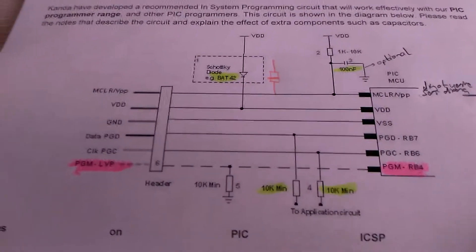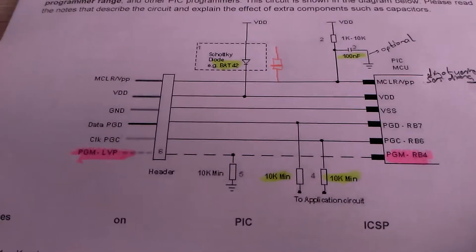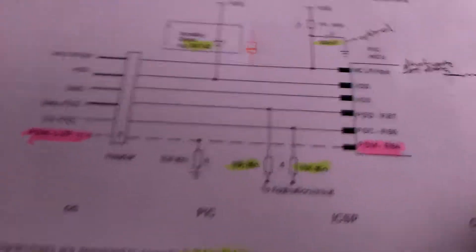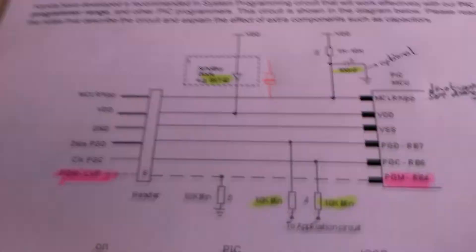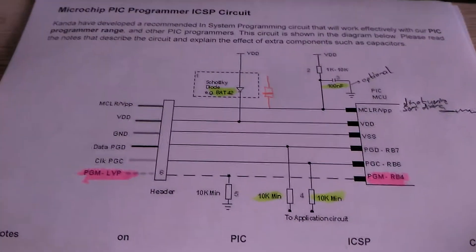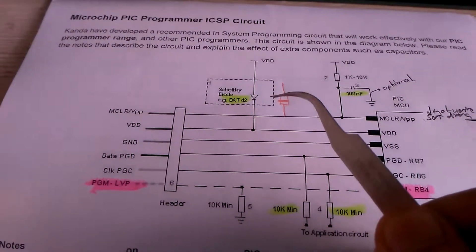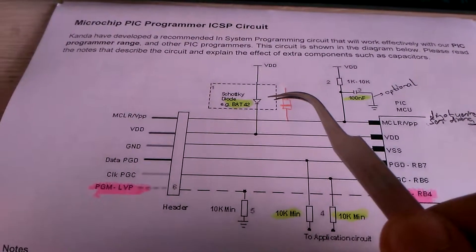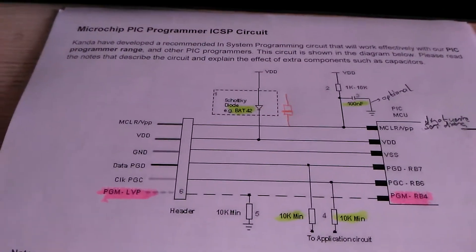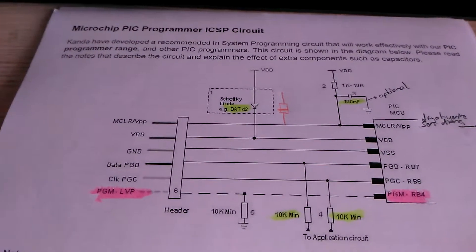In Microchip's company suggested connection diagram shown in the picture, the most important component is the Schottky BAT42. The BAT42 is a 30V 200mA Schottky diode.